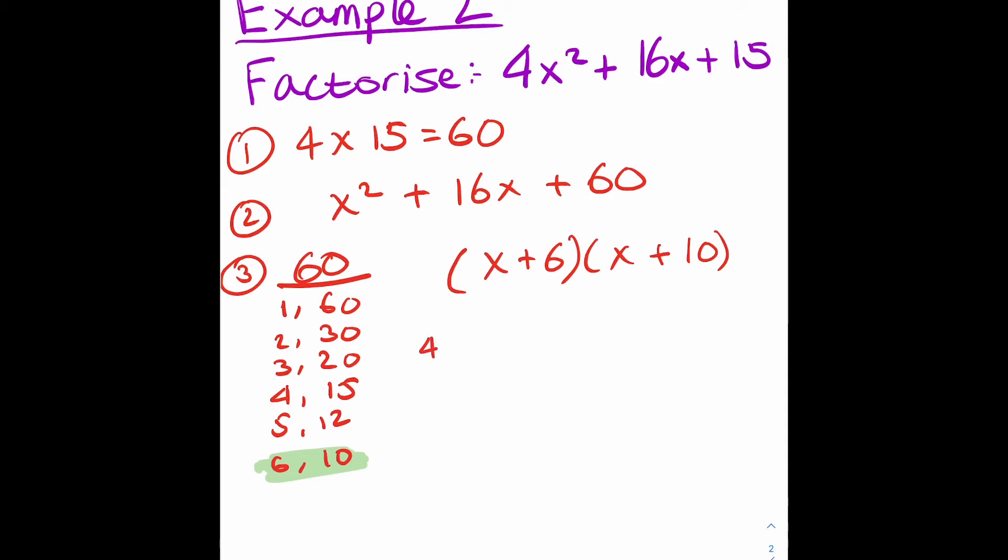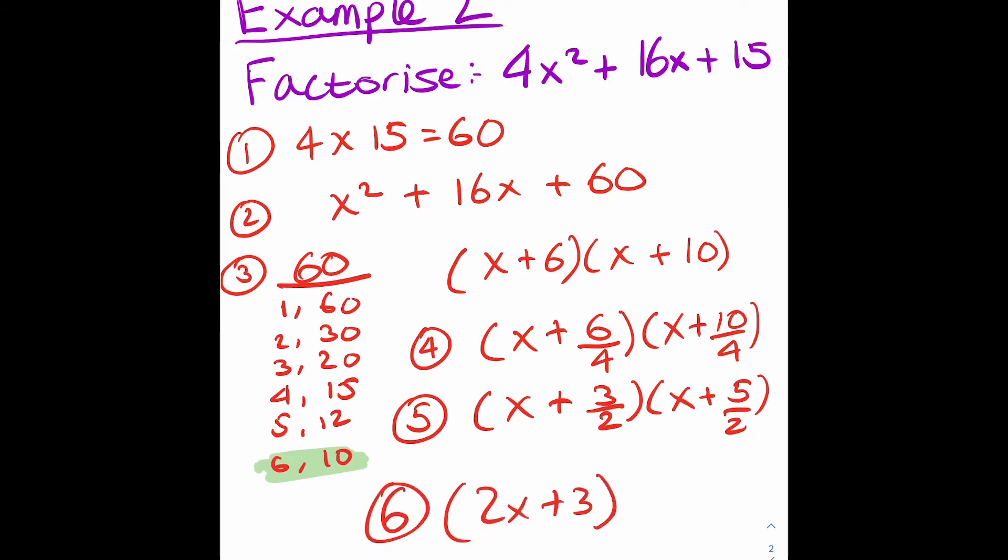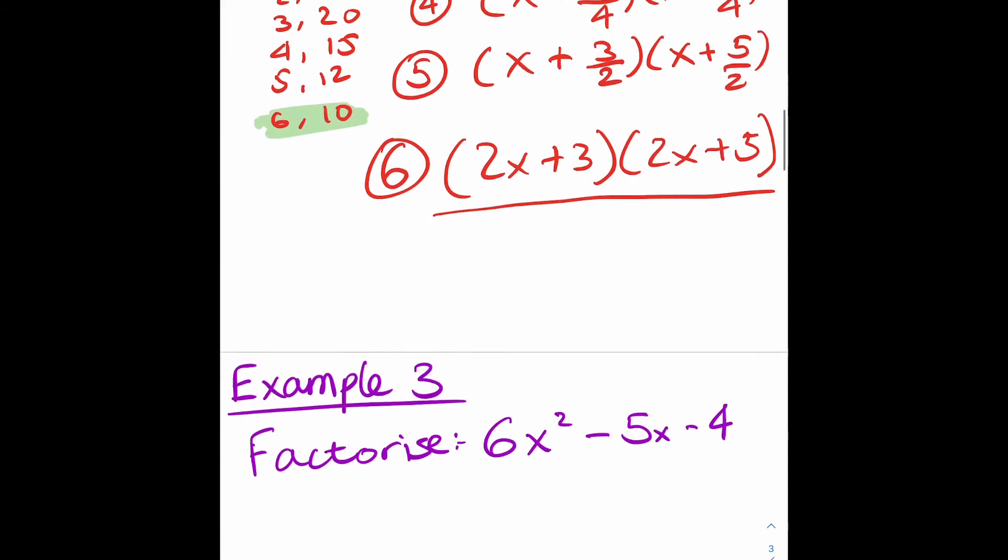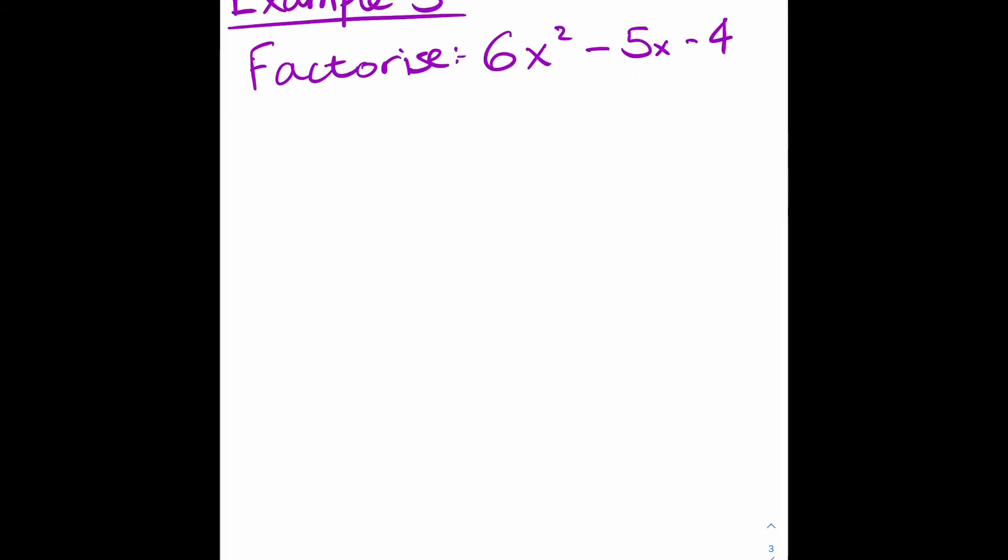Step 4, where it starts getting tricky but not too hard. We now divide by what we times by, so we're always dividing by the number in front of x squared. So we'd write x plus 6 over 4, x plus 10 over 4. We now move on and simplify those fractions. In this case I can change it to x plus 3 over 2 and x plus 5 over 2. Once I've simplified them as much as I can, I just slide the denominators back so I get 2x add 3 and 2x add 5, and that's me now factorized the full thing.